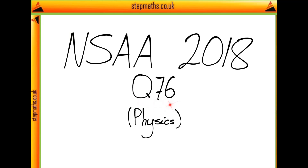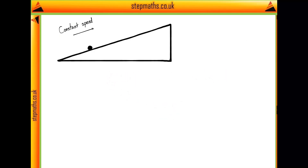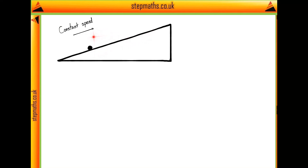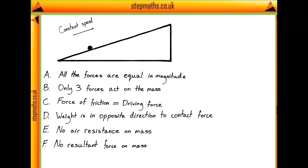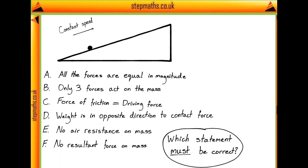Here we're going to look at question 76 from the NSAA 2018 paper. In this question we're told we have a ball moving up a slope in a straight line at a constant speed. Then we're given a series of six statements and asked which statement must be correct.